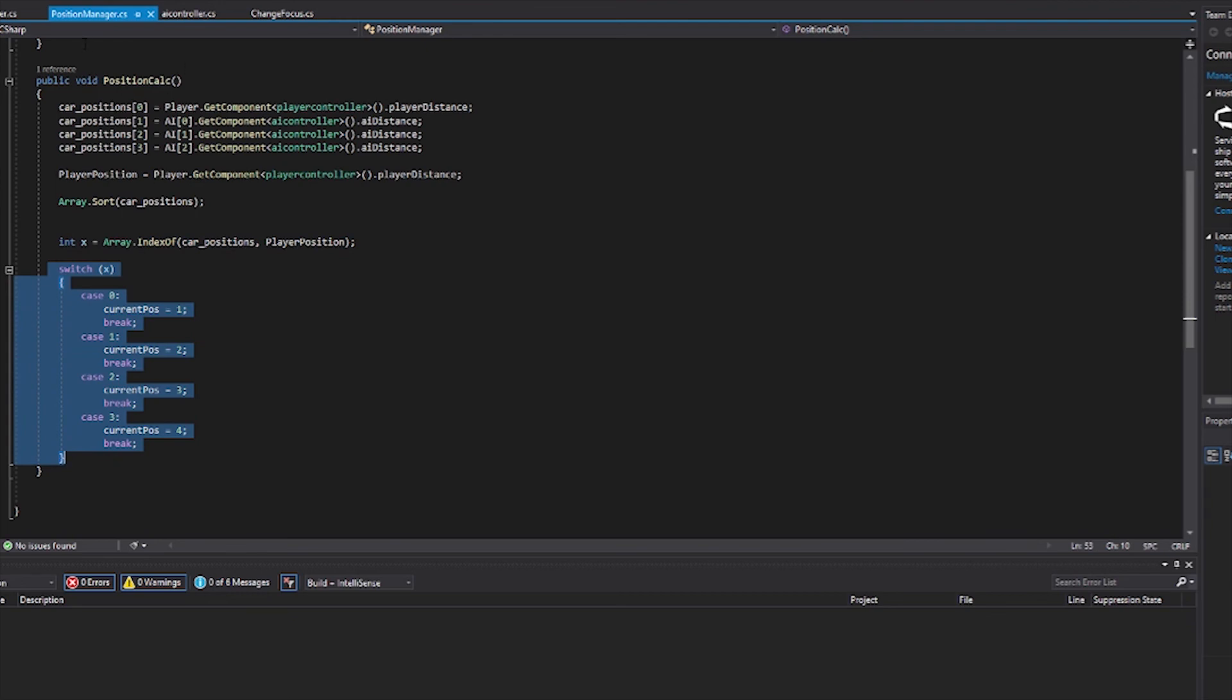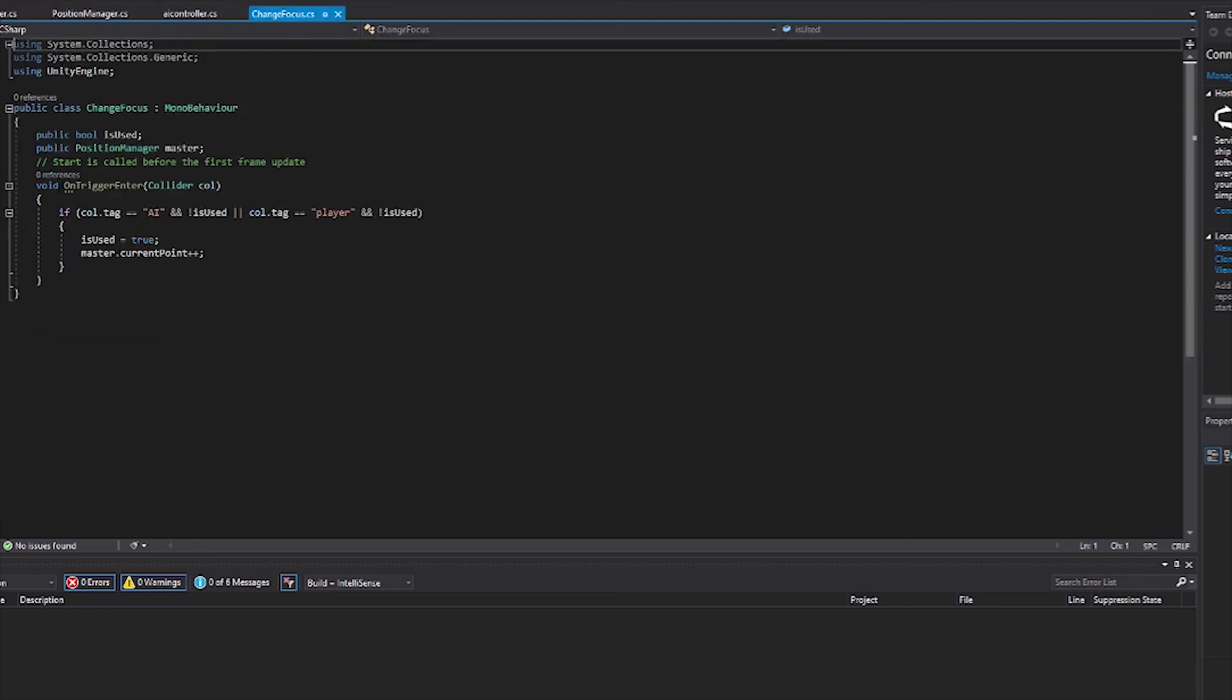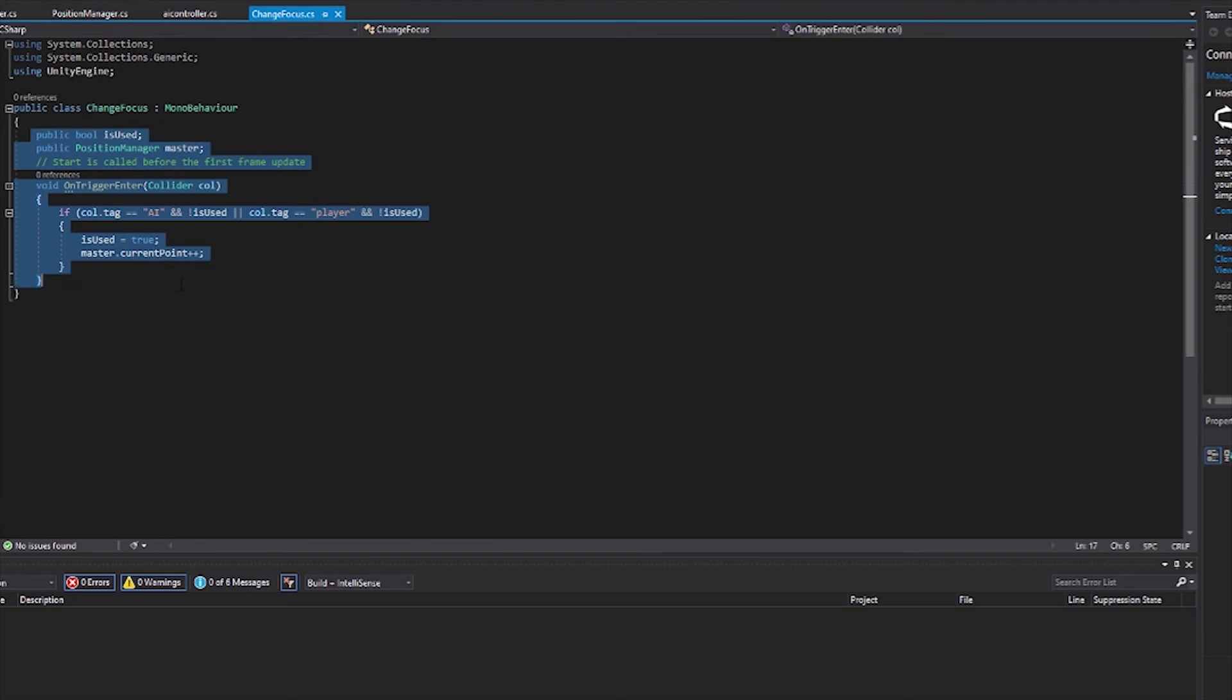In your player script, create a function to calculate the distance from the player to the current active waypoint. Repeat the same for the AI. Create a script to change the focus of the waypoint when a player has gone past it. Make sure to check if it has been used by a player already so as not to have confusing results.